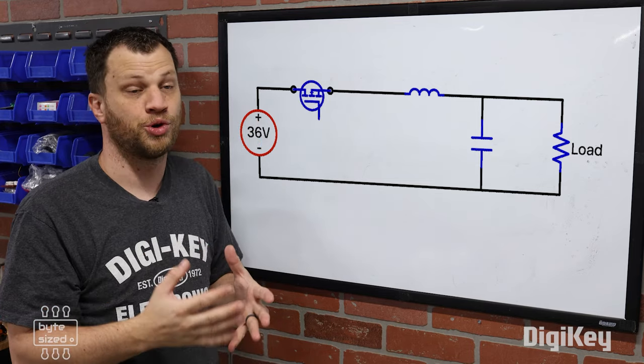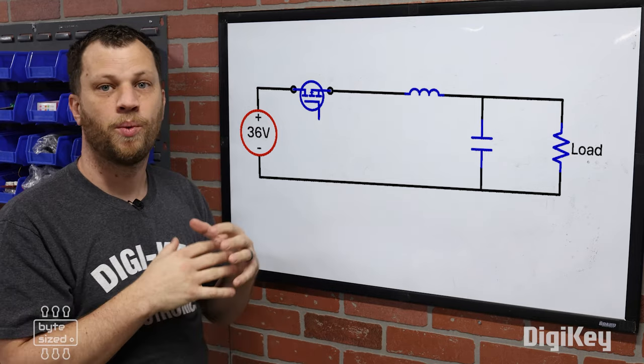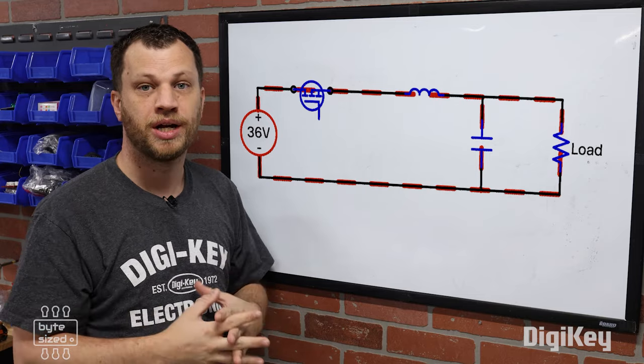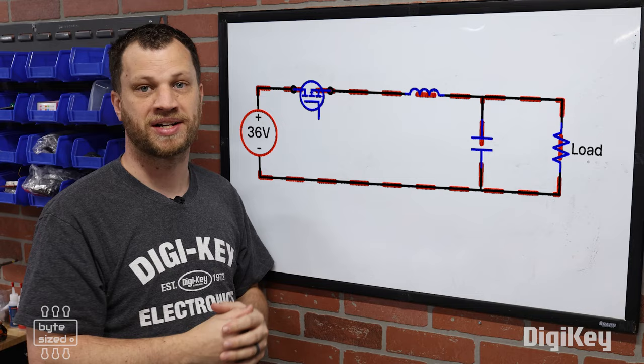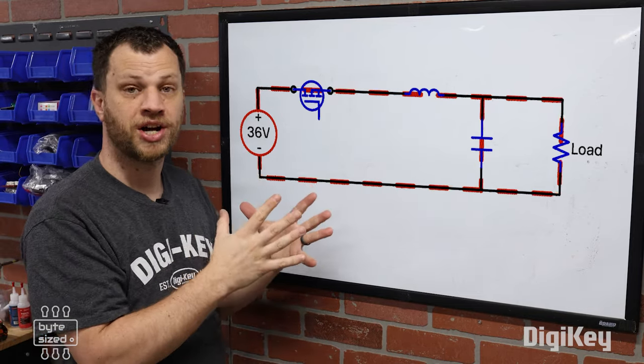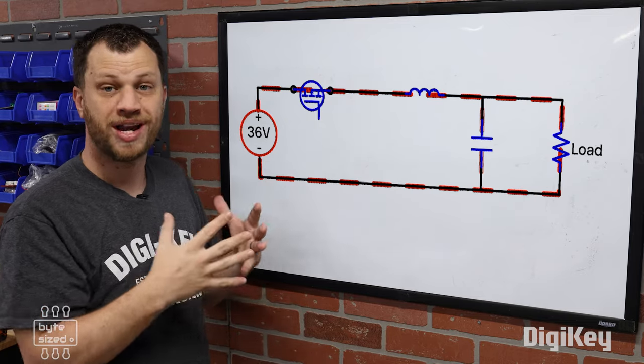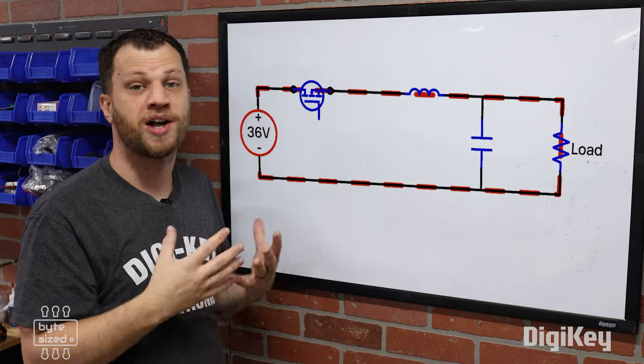The MOSFET can be controlled using a microcontroller or a 555 timer or some other component. When the MOSFET is closed, current will flow through the inductor and capacitor. Both of those components will store energy in their magnetic and electric fields respectively. Here's where this circuit presents another problem. Once the inductor has energy stored in its magnetic field and the MOSFET opens, that current has nowhere to go. The current will want to flow back through the MOSFET, which will cause it to be destroyed.